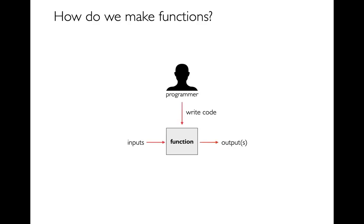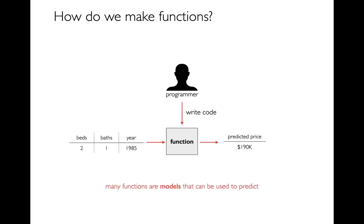All of you have been running functions for a long time. Functions take inputs in the form of parameters and produce outputs — either printing something or returning a value. For example, a function could be doing something like making a prediction. Maybe my input is some details about a house that's for sale, and then I'm predicting what it might sell for. A function like this is an example of a model.